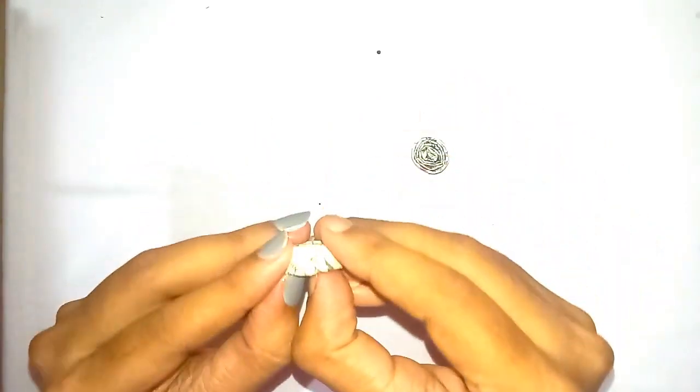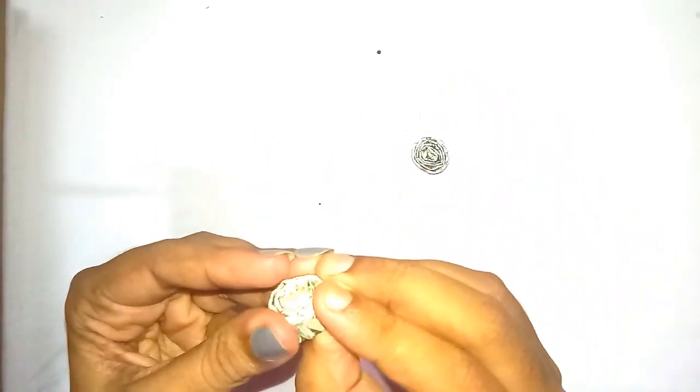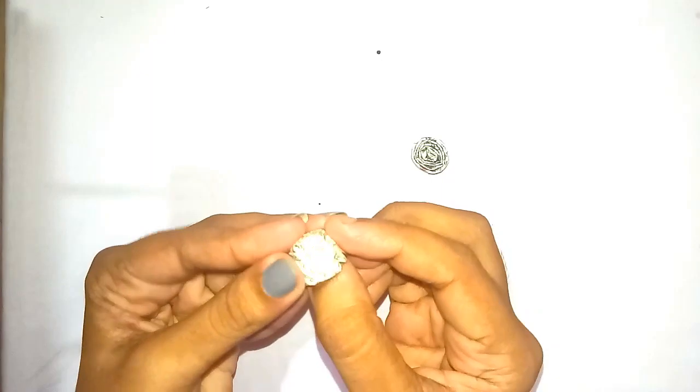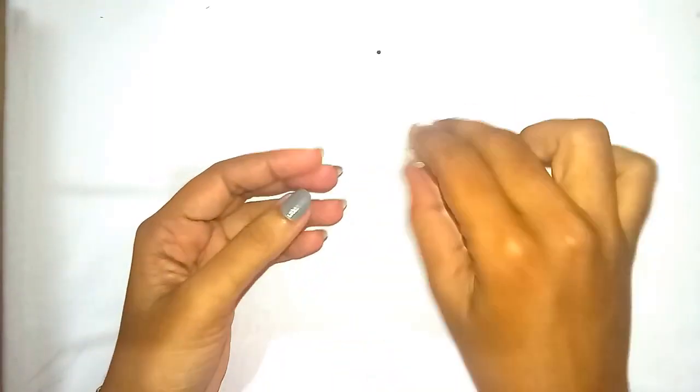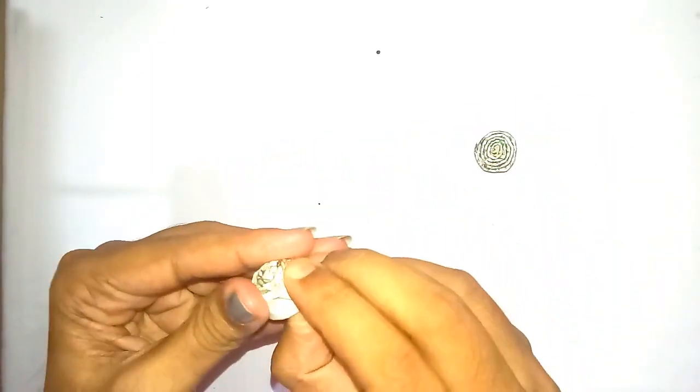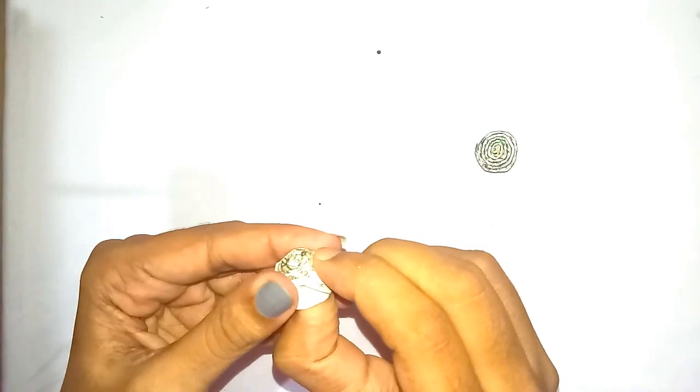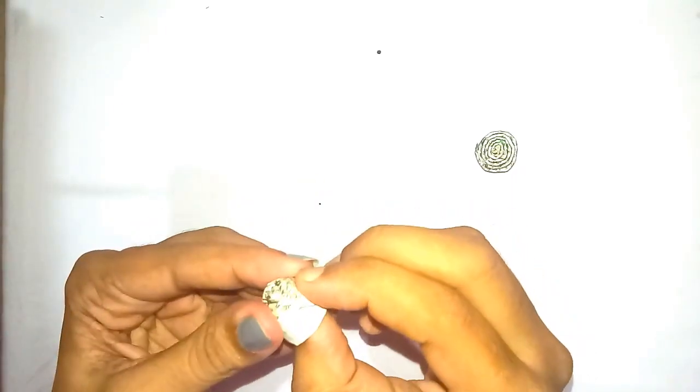Both the small paper reels are ready. Again, slowly push the paper from inside. Take the second paper reel and slowly push it from one side as you have done with the first one.